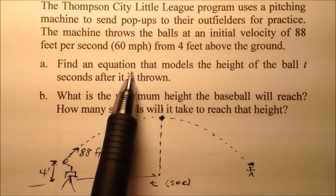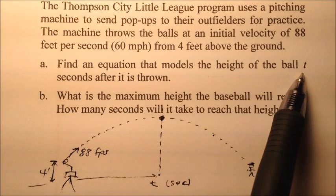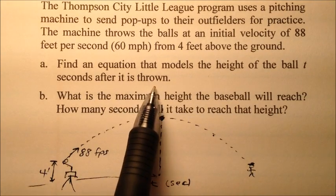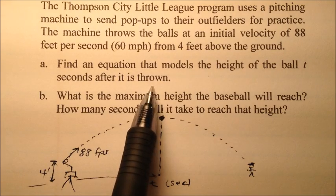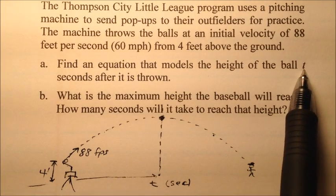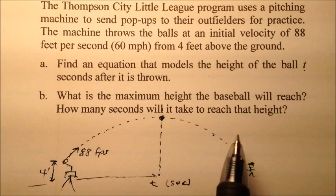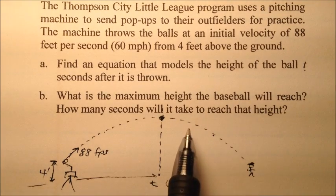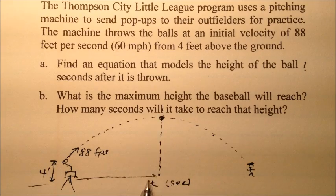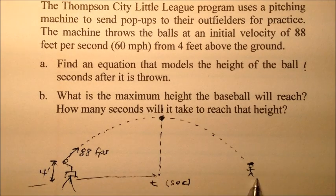Part A says: find an equation that models the height of the ball t seconds after it's thrown. t is our independent variable, representing time. Our y value, the dependent variable, is the height. How high is our ball from the ground?